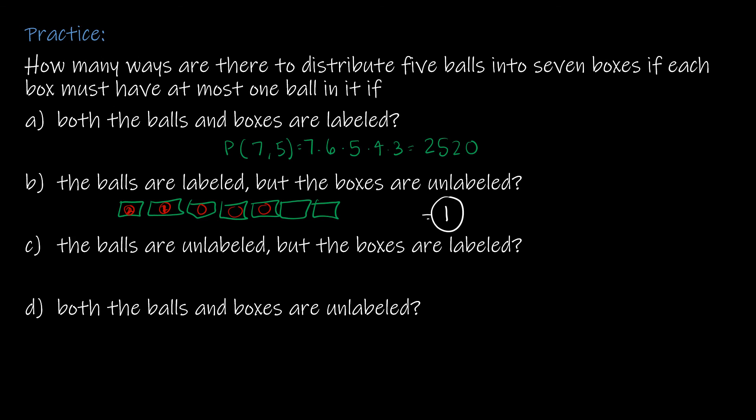For part C: the balls are unlabeled but the boxes are labeled. Because the boxes are labeled, I'm choosing which five of the seven boxes receive a ball, giving C(7,5) = 21.